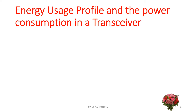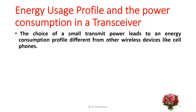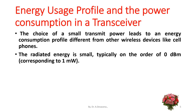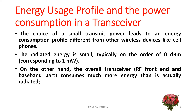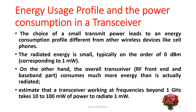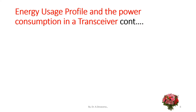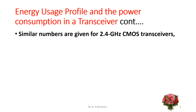The next design consideration is energy usage profile and power consumption in a transceiver. The choice of small transmit power leads to an energy consumption profile different from other wireless devices like cell phones. The radiated energy is small, typically on the order of 0 dBm, corresponding to 1 milliwatt. Similar numbers are given for 2.4 GHz CMOS transceivers.